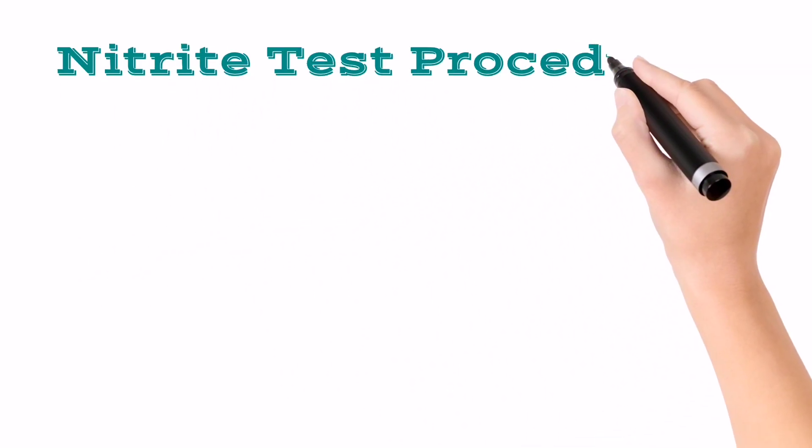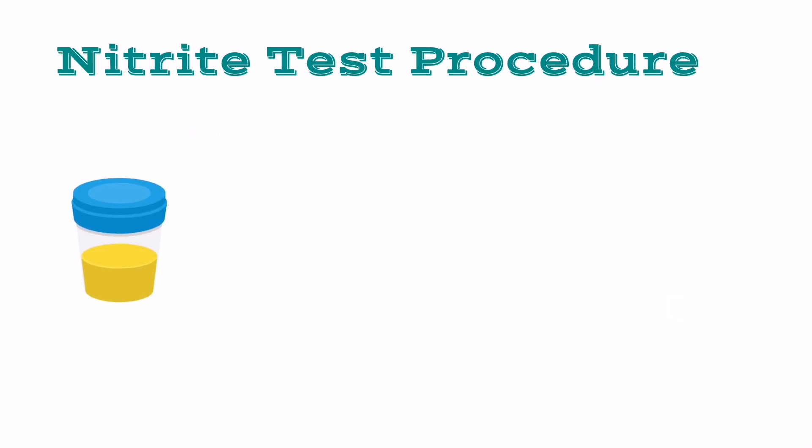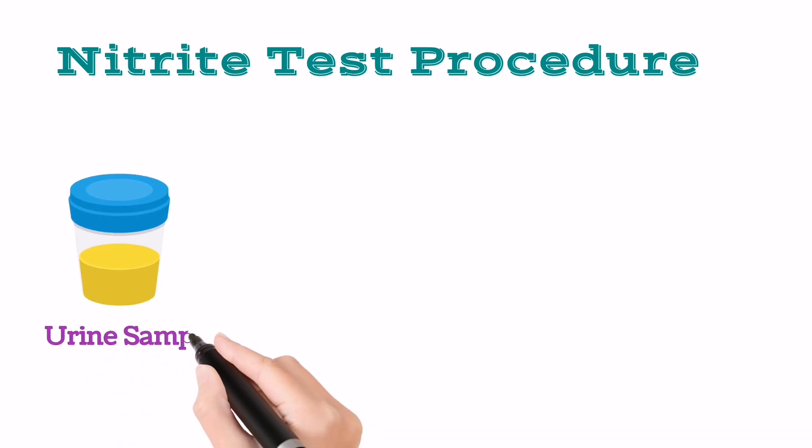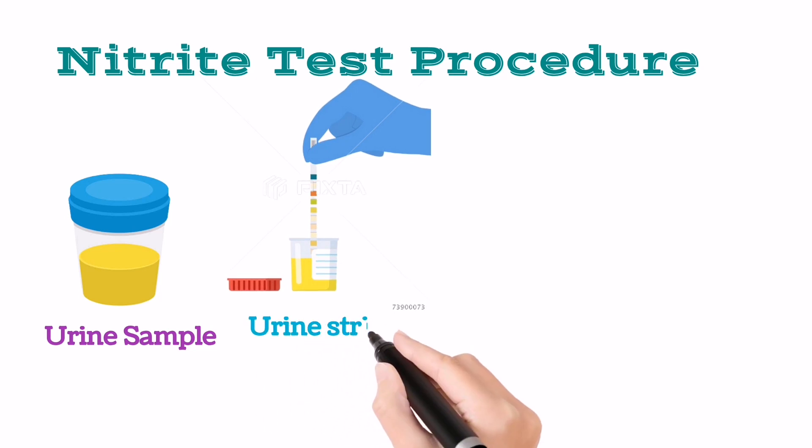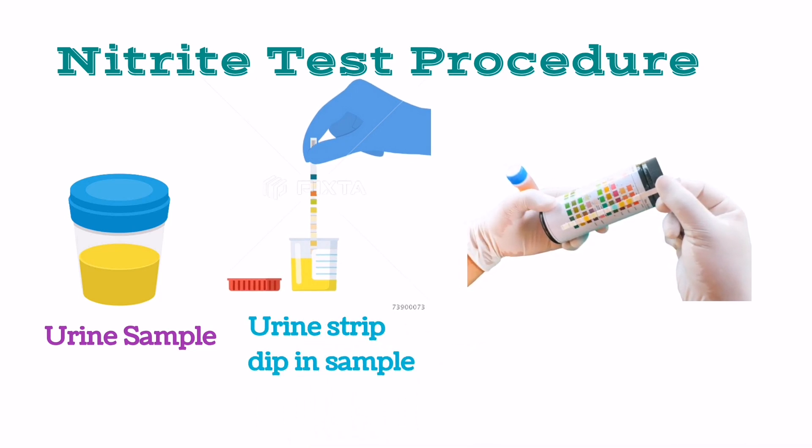Now how is urine nitrite test done? First, a urine sample is collected from the patient, then a urine strip is dipped in the sample. After that, the strip is cross-matched with the color bars present on the strip box.